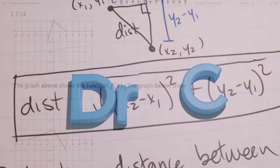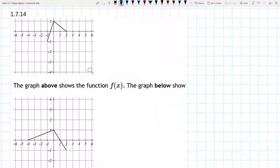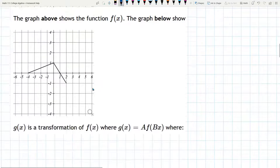This question can be extra tricky. We have a base graph, a b of x graph, and then we want to figure out what transformations created this graph down below.